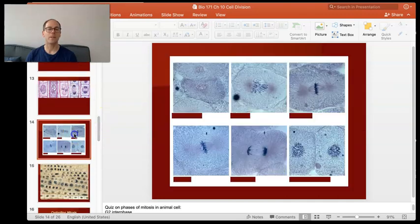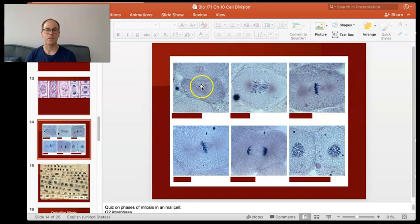It looks a little bit different in animal cells. So these images are from whitefish cells. So you can see here, this is a cell in interphase. You can see the nucleus. The cell in prophase, where you can see the chromosomes really clearly. The nuclear envelope is starting to disintegrate. You can see these spindle fibers forming here.